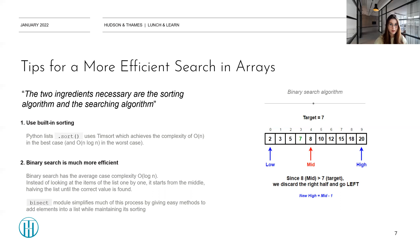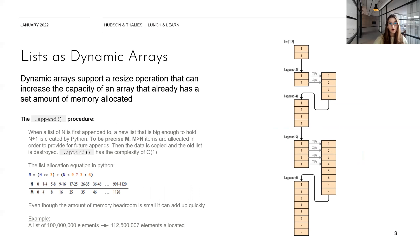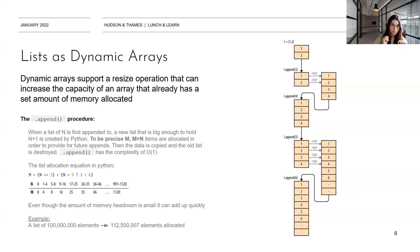Now it's the natural time for us to talk about lists. We've already mentioned that lists are dynamic arrays and they support resizing operations that can increase the capacity of an array that already had a set amount of memory allocated. It's natural for lists to make mutability their key feature, and in the best interests of Python developers, a way was created for lists to be as fast as possible at their key goal: being mutable. So here we get the append procedure. The append procedure has the complexity of O(1) — this is incredible. The speed of append is always O(1) in the best case and in the worst case. However, it comes at a cost, and unfortunately that cost is in memory usage.